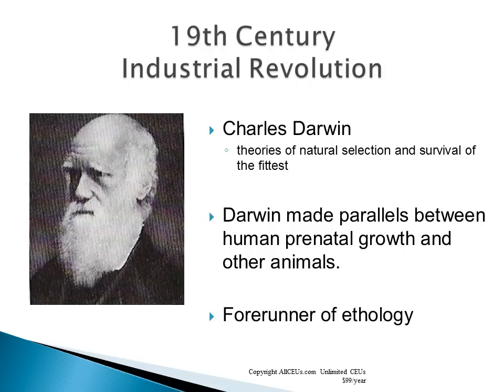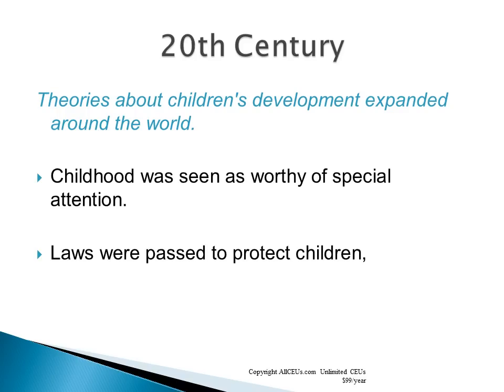In the 19th century, during the Industrial Revolution, Charles Darwin emerged. His theory of natural selection and survival of the fittest became very popular and very controversial. He made parallels between human prenatal growth and other animals, and was the forerunner of pathology. Finally, in the 20th century, theories about children's development expanded around the world. The child was seen as worthy of special attention, and laws were actually passed to protect children.